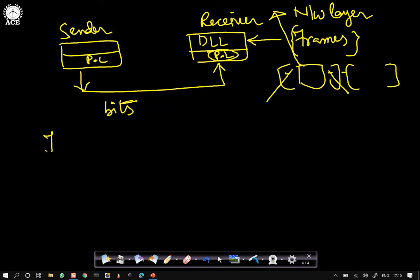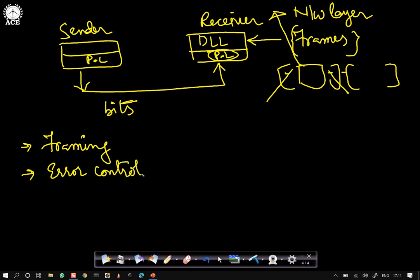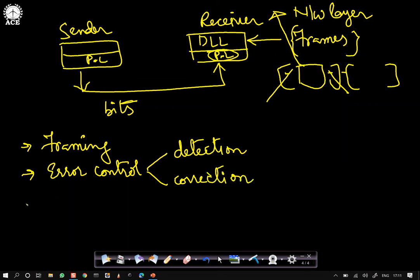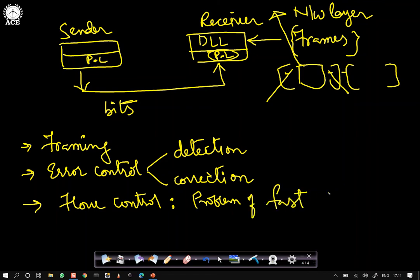The important functions of the data link layer are: framing — how to frame the packets; error control — finding out whether frames got into error, dealing with both error detection and correction; and flow control.